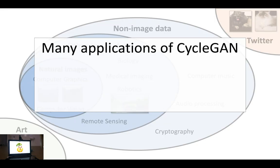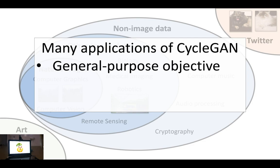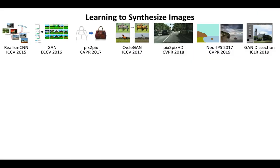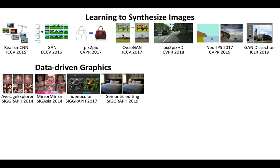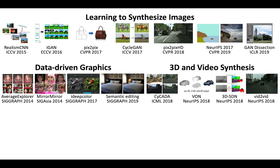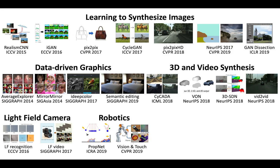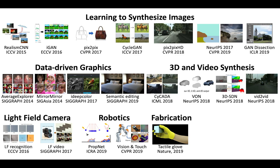All these applications come from different fields using different kinds of data, but all are based on CycleGAN, as our learning objective is quite general and requires no human annotation or parameter tuning. In this talk, I mainly focused on learning-based methods for image synthesis, but I have also done work in data-driven graphics and learning-based methods for 3D data and videos. In the past, I was fortunate to collaborate with researchers from computational imaging, robotics, fabrication, and security.